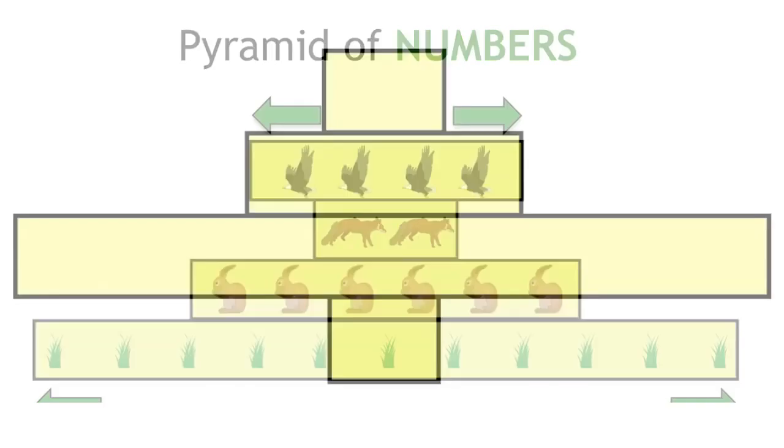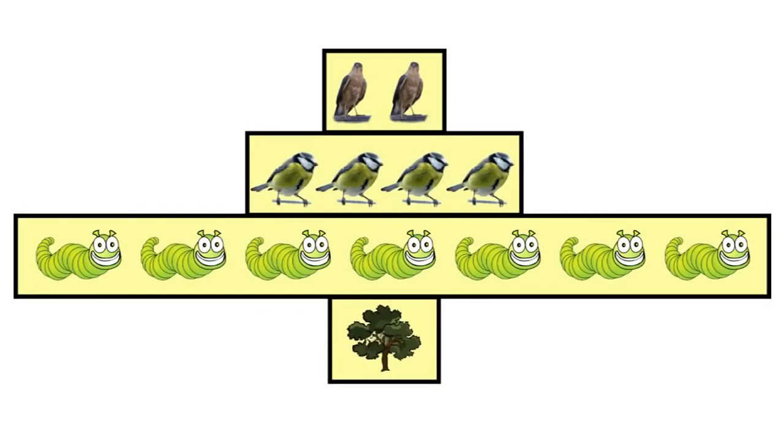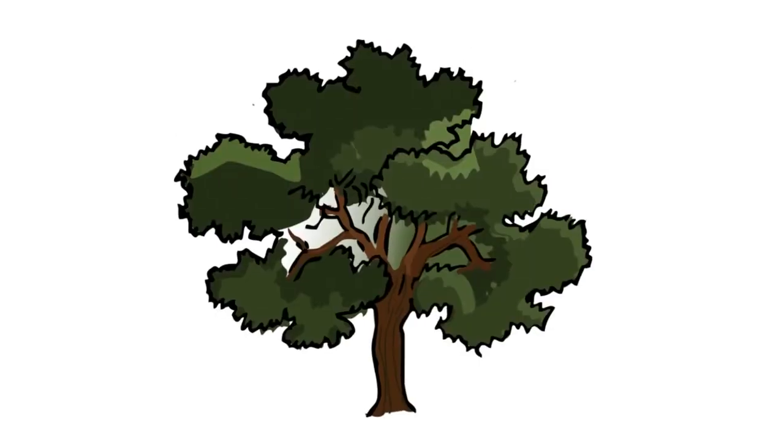Pyramids of numbers can end up looking a bit wonky. For example, if one primary producer can feed lots of primary consumers, like an oak tree, which feeds lots and lots of little caterpillars.